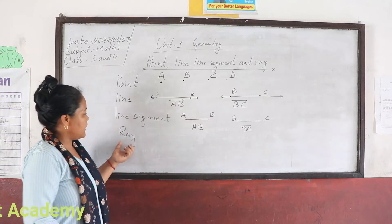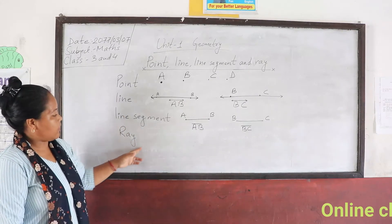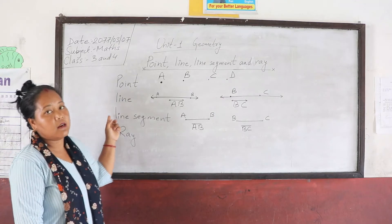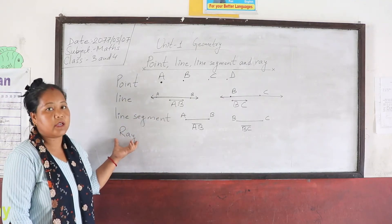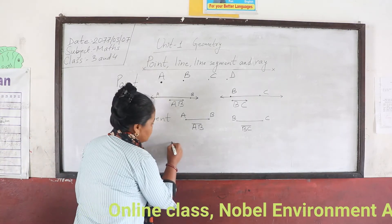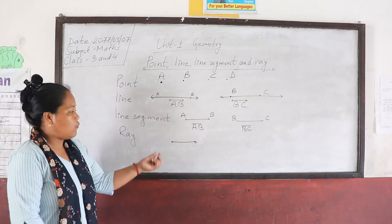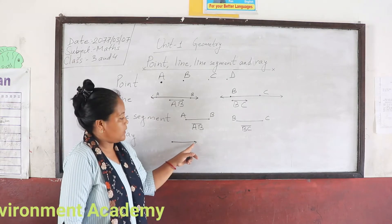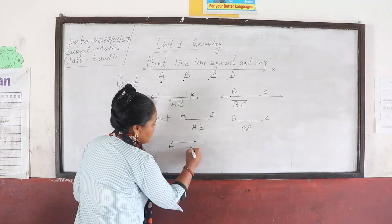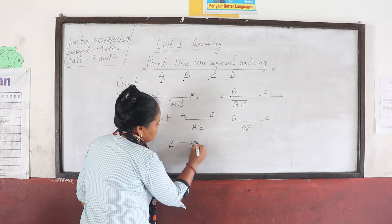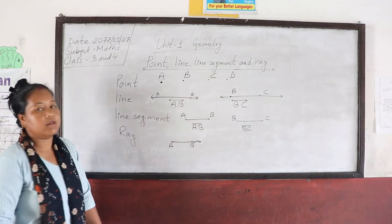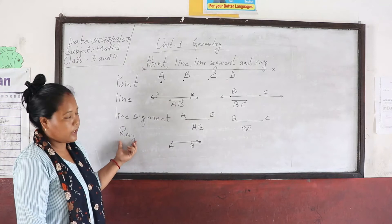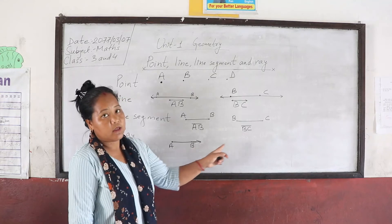Next is ray. In class 3 book there are only three topics — point, line, and line segment. In class 4 book, ray is also given. So what is a ray? A ray is also a part of a line. In a ray, one point is fixed — a ray has one endpoint and the other end can be extended. So A,B — here point B is the endpoint, so this is called a ray.